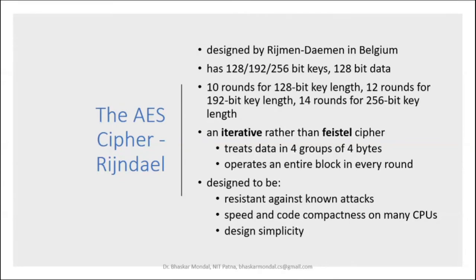The AES cipher was originally designed by Rijmen and Daemen. It has three key options and corresponding round counts. It is iterative rather than a Feistel cipher — the 10, 12, or 14 rounds can be seen as iterations. It treats data in groups of four bytes and operates on the entire block in every round.